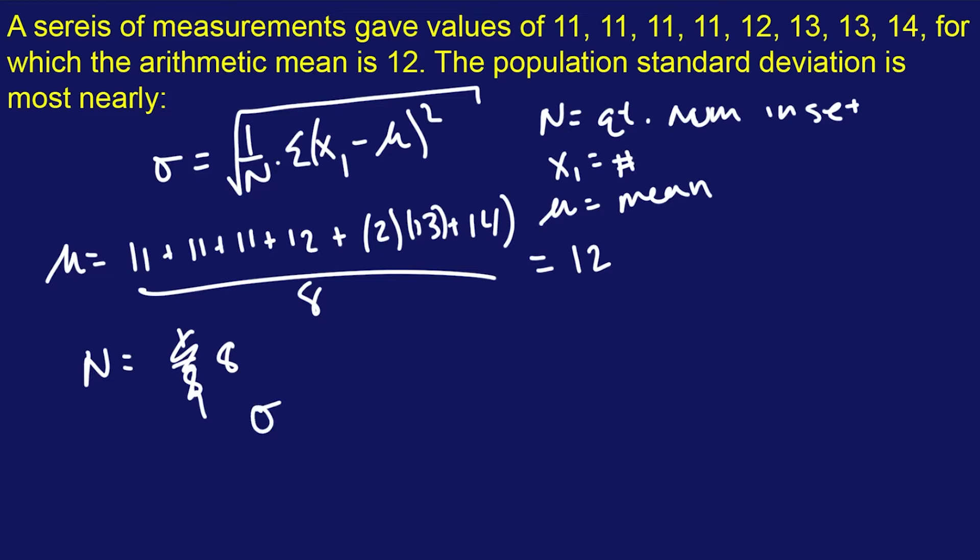And then what you're going to do is do all this arithmetic. I really don't want to write all this out, but we'll do the first one. So x1 is going to be 11. So we're going to do 11 minus the population mean, which is going to be 12, and then we square it. Now we have four 11s. I believe I forgot an 11 over here. There's four elevens. And we're not going to write this four times. We're going to multiply by 4, of course.